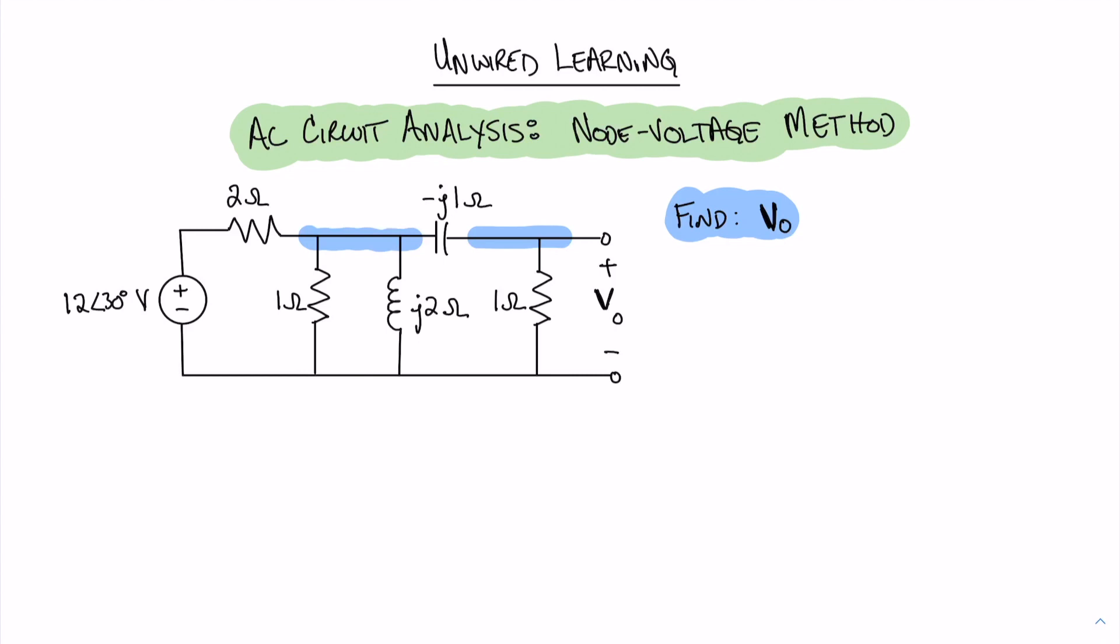When conducting node voltage method for AC circuits, it's actually very similar to simple DC resistive circuits. The only thing that we need to keep in mind is that we have impedances instead of resistances. Because of that, we're going to include the impedances for things like our inductor and our capacitor.